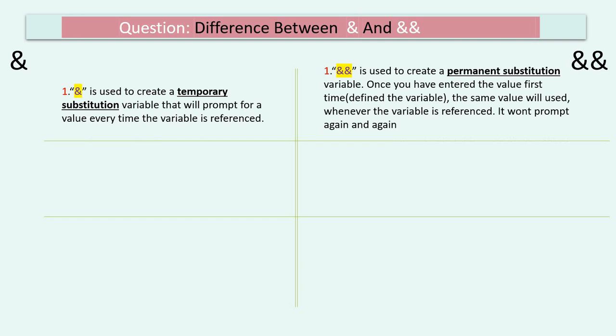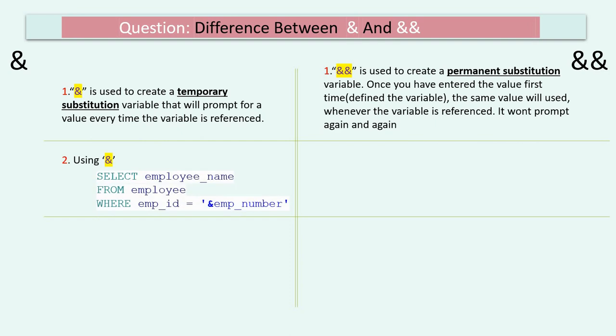Now let me show you how to use ampersand and double ampersand. It is very simple and straightforward. As part of our script, we just need to write ampersand followed by the variable name that we want to prompt at runtime.